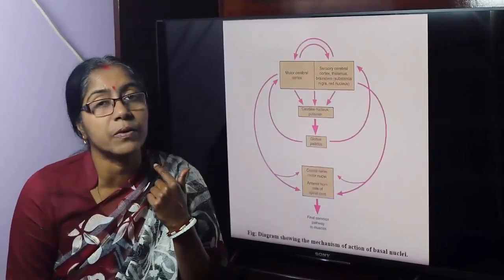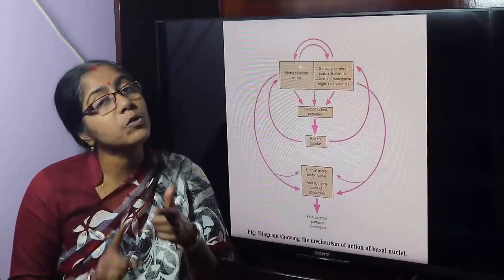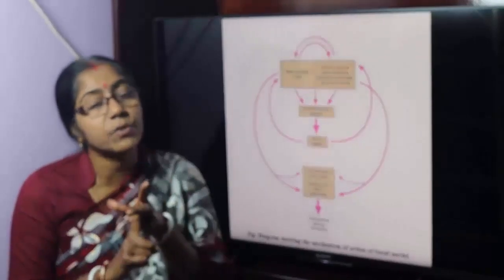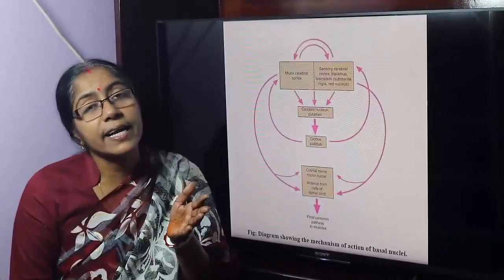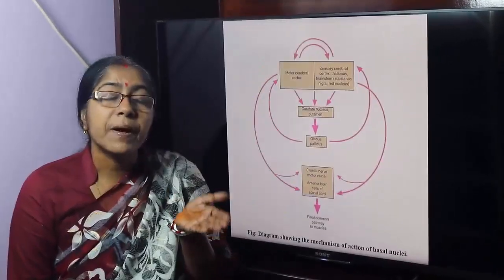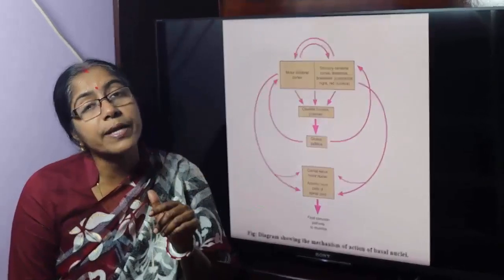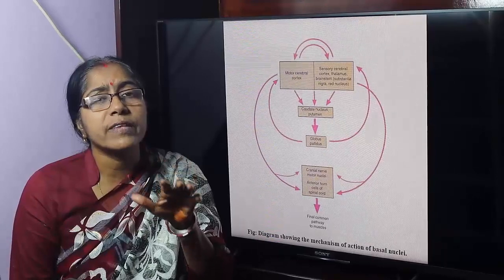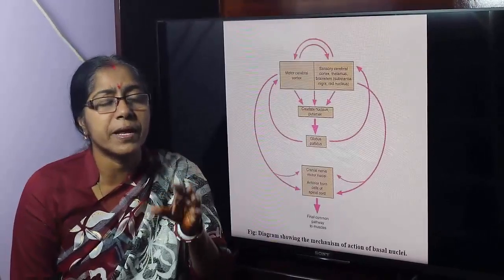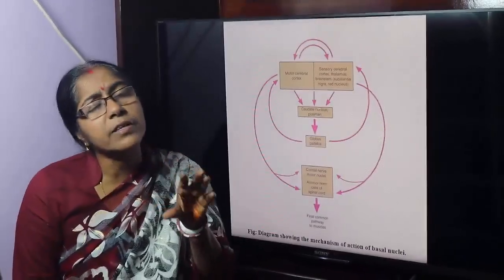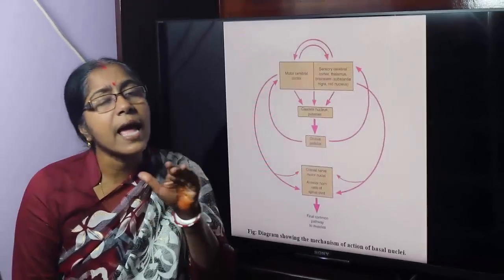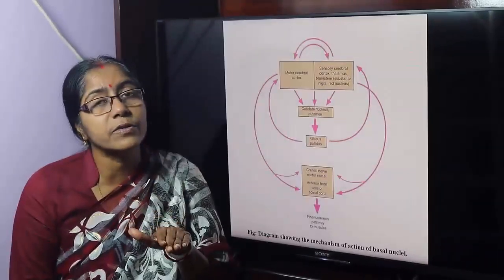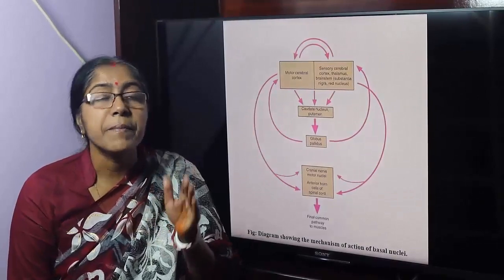Chorea involves sudden, involuntary movements of the head, sweep, and grimace. There are two types of chorea: Huntington's chorea and Sydenham's chorea. Athetosis is a hypokinetic disorder characterized by slow, sinuous, writhing movements. This is athetosis, seen in middle-aged people.